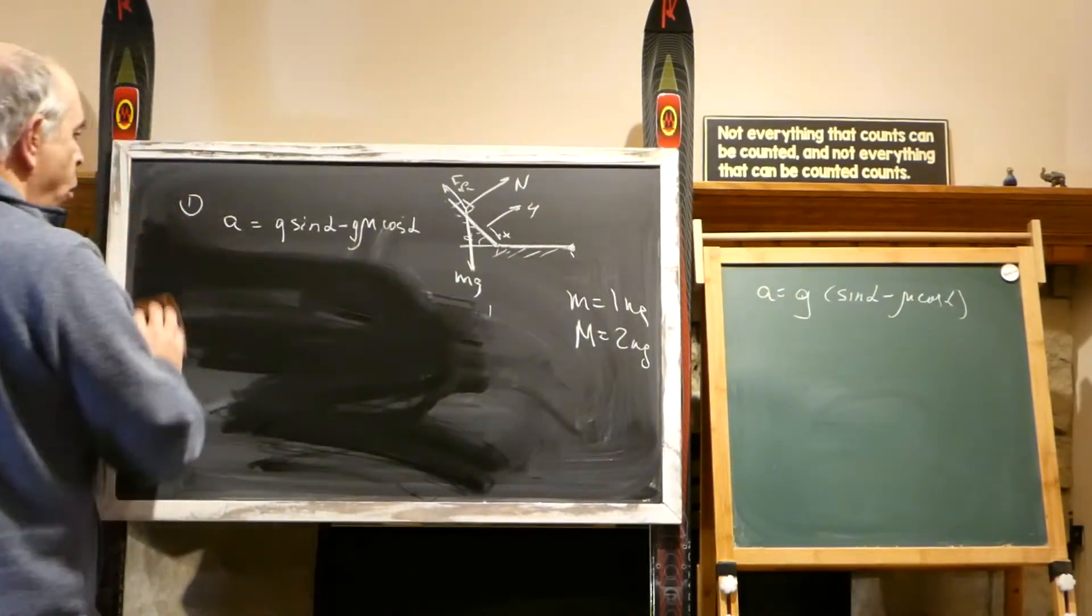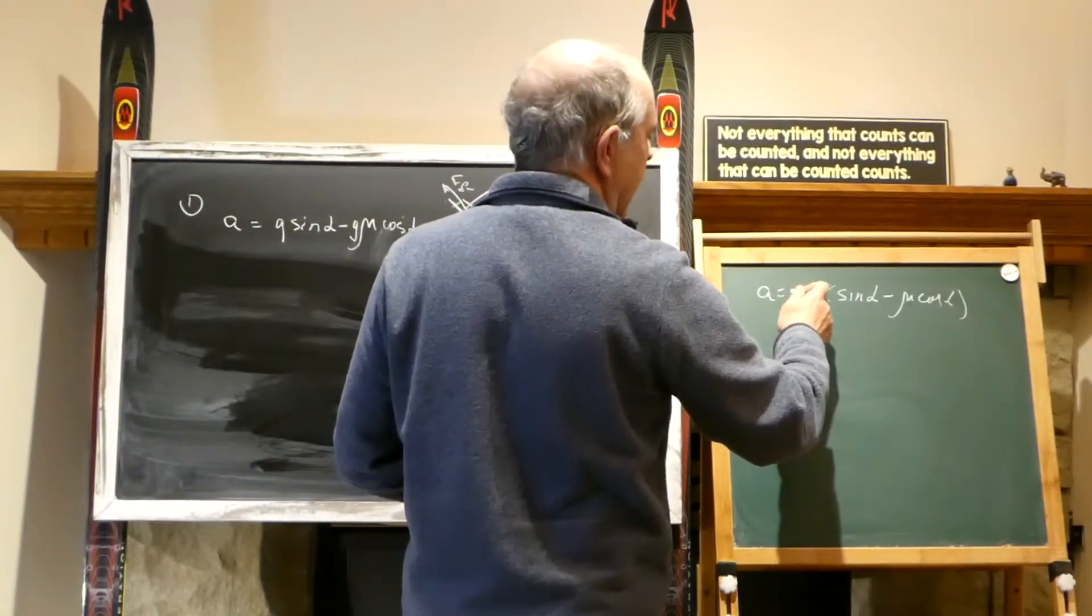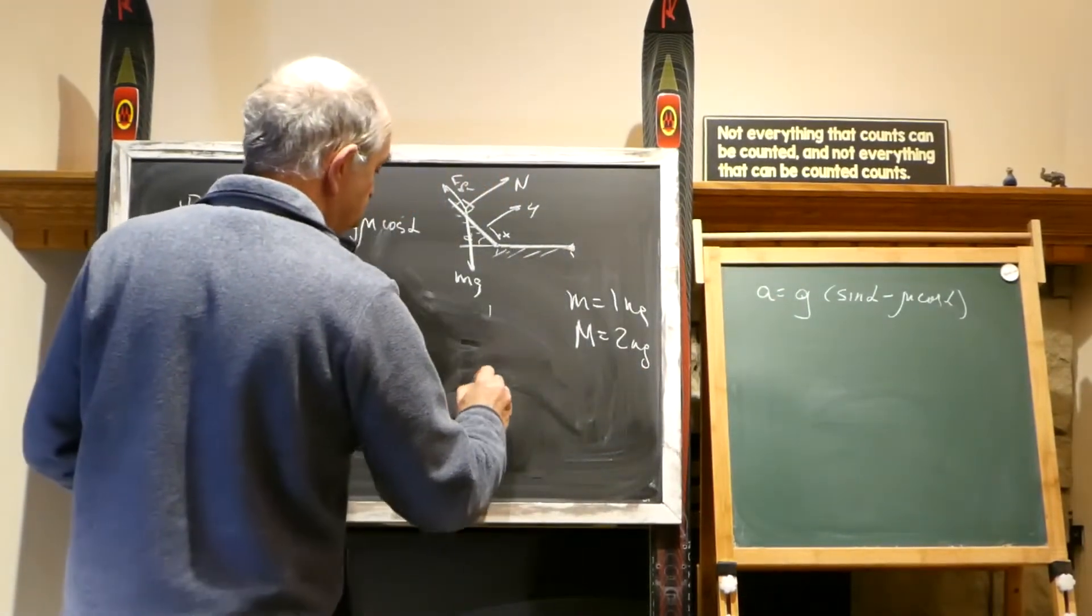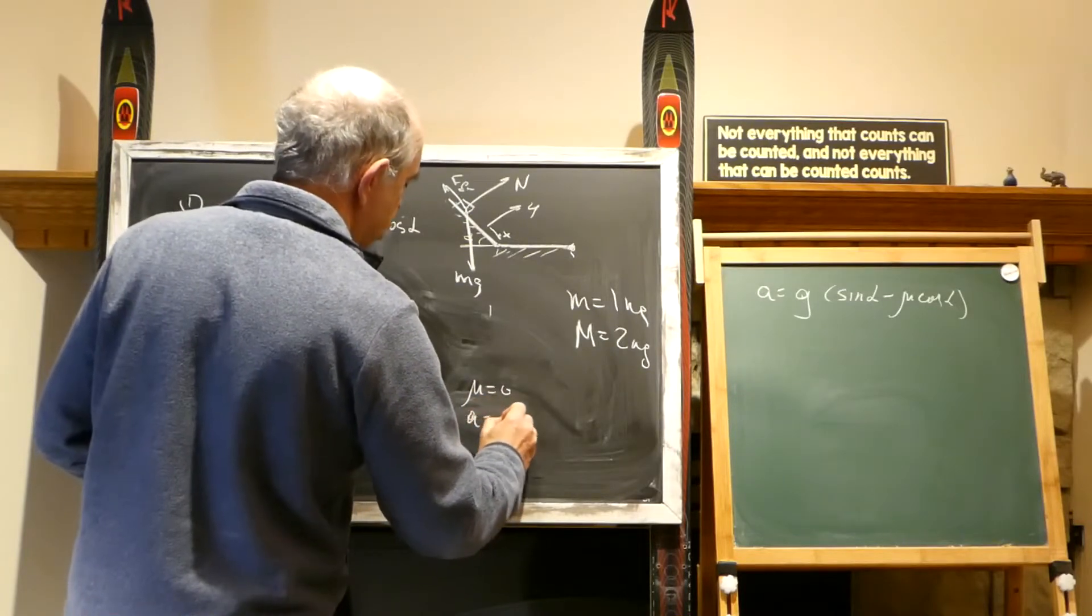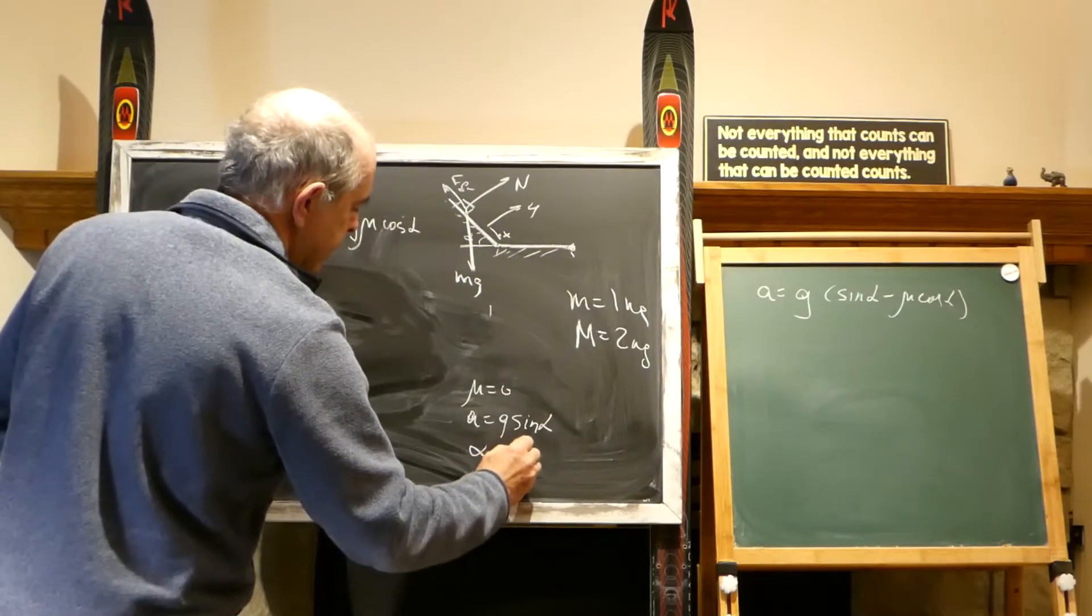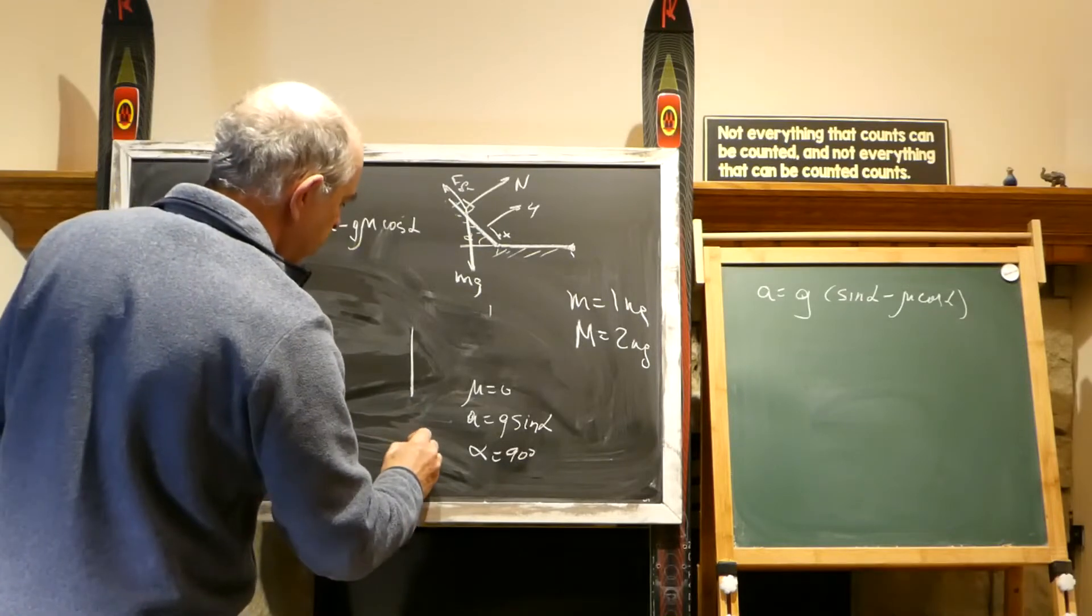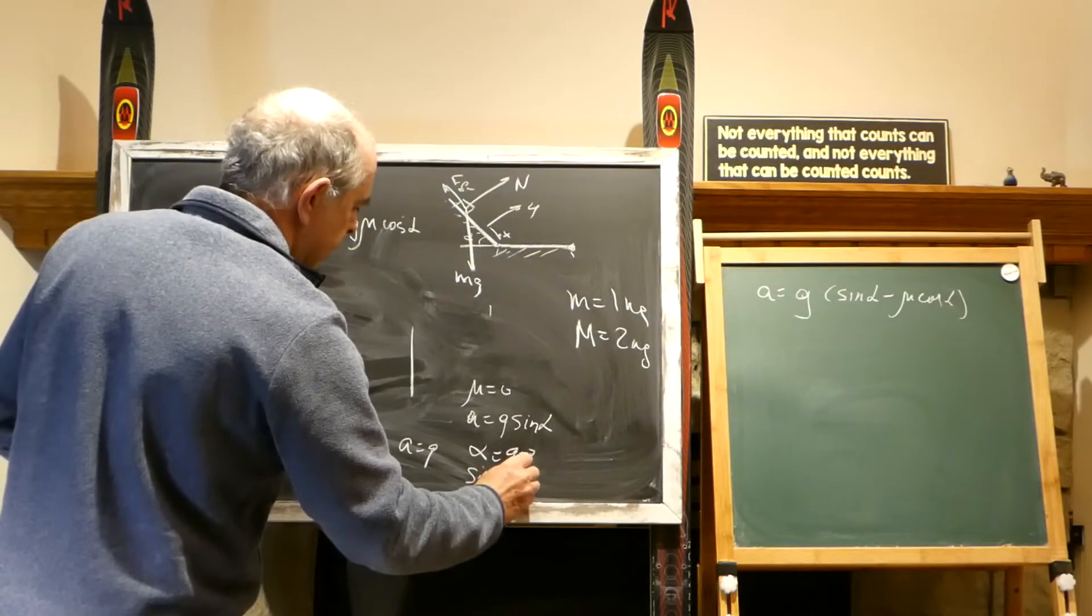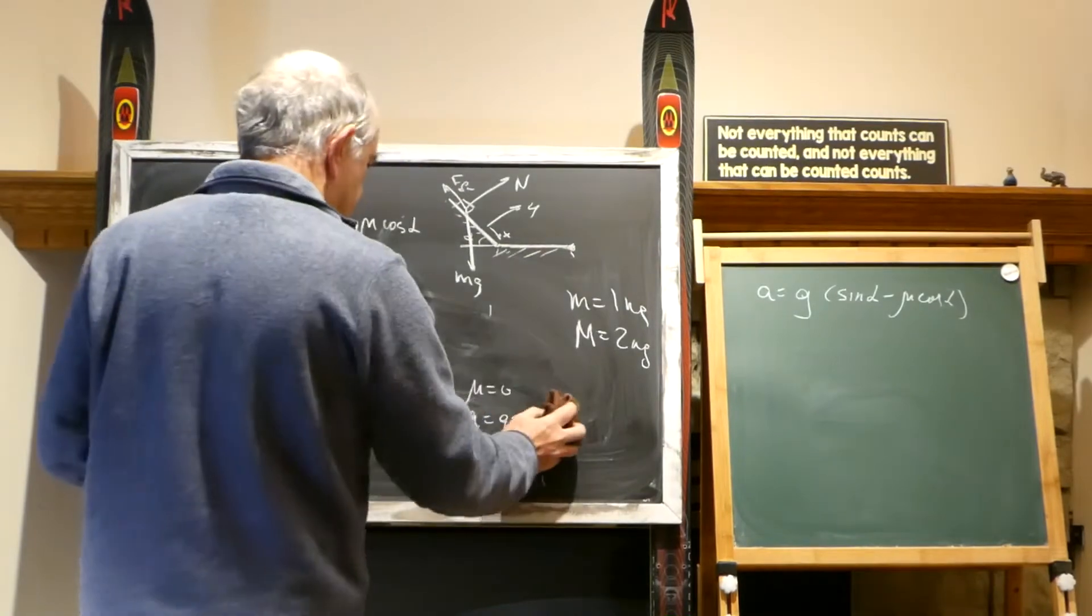And of course, if we go without friction, mu equals zero, no friction, that means A equals G sine alpha. And of course, if mu equals zero, A would be G sine alpha. And of course, if alpha on top of this equals 90 degrees, it would be a freefall. And if it's freefall, A equals G because sine 90 degrees is equal to one. So everything is good, all the extreme situations are covered.